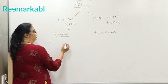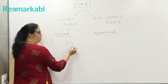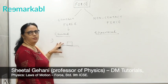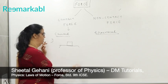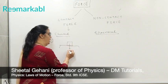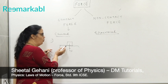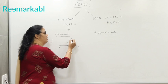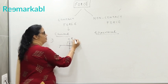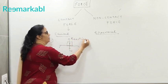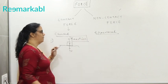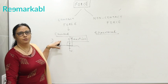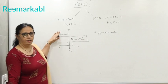First one, suppose the book which is kept on this table. Which are the forces acting on it? Yes, the weight of the body acting vertically downwards. What is the force applied by the table on the book is referred to as the normal reaction force. So this force is experienced by the body by coming in contact with the surface. So normal reaction force is referred to as a contact force.